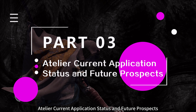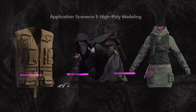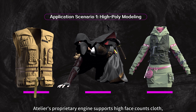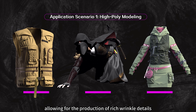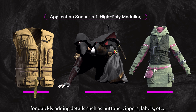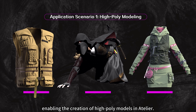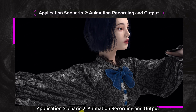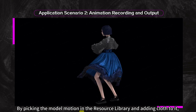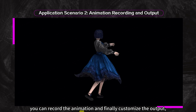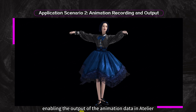Part 3: Atelier's current application status and future prospects. Application Scenario 1 is High Poly Modeling — Atelier's proprietary engine supports high face count cloth, allowing production of rich wrinkle details, with accessory tools for quickly adding buttons, zippers, and labels. Application Scenario 2 is Animation Recording and Output — by picking a model motion from the resource library and adding cloth to it, you can record the animation and customize the output.